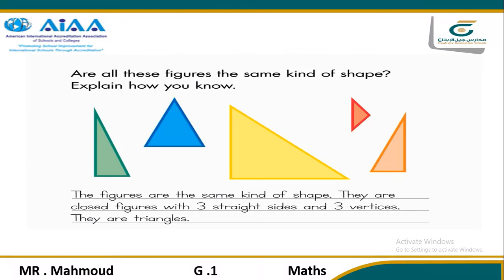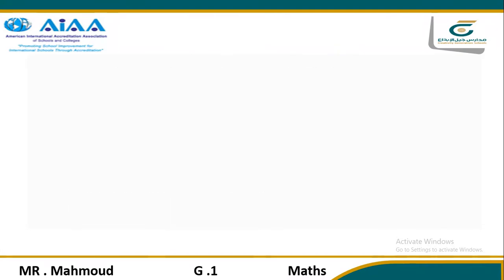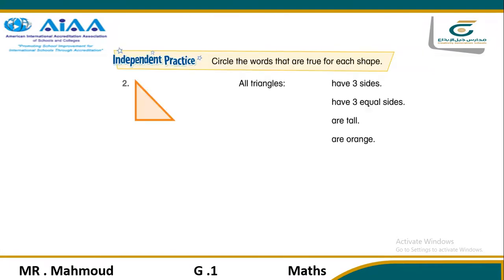Understanding the attributes that define two-dimensional shapes will help students create the shapes. We can define two-dimensional shapes by the number of sides or the number of vertices, but we cannot define them by color, size, or anything else.